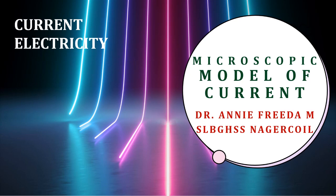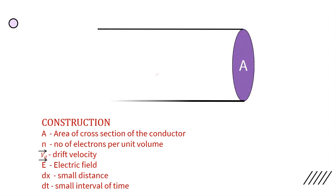In this video, we discuss the microscopic model of current. Let us consider a cylinder of cross-section area A.